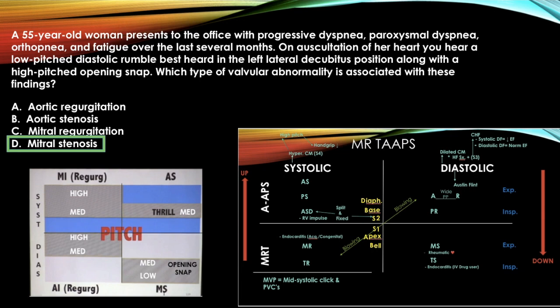This one is mitral stenosis. Using just the pitch chart: low pitch diastolic murmur = mitral stenosis. The left lateral decubitus position is also associated with mitral stenosis but isn't on the charts to keep things simple. They also give the opening snap, which confirms mitral stenosis on the pitch chart. Location at the apex confirms it on Mr. Taps as well.